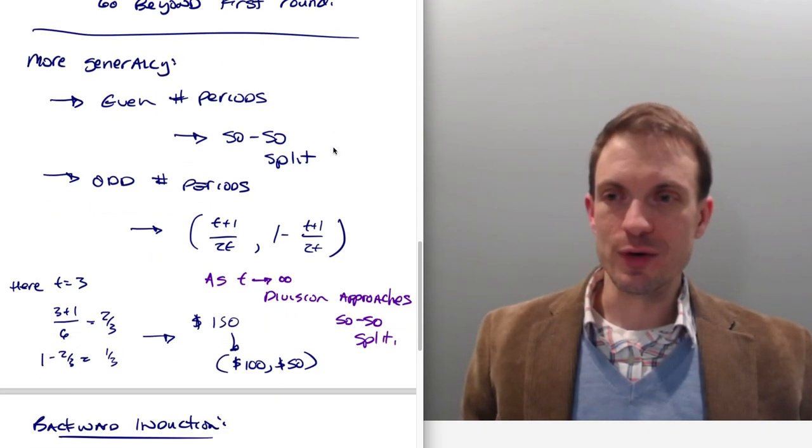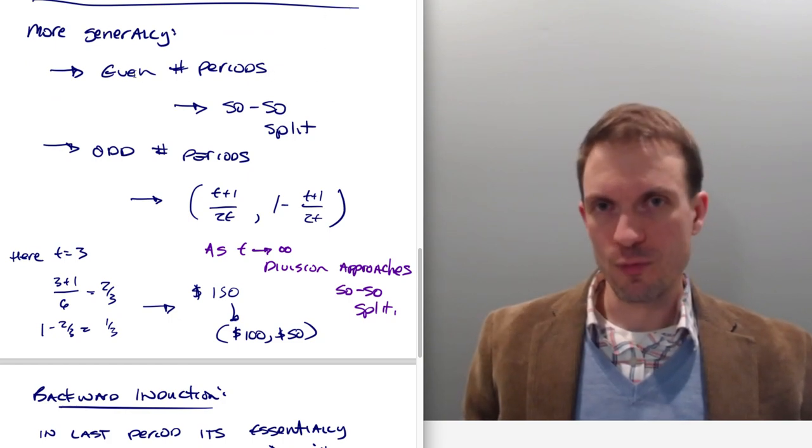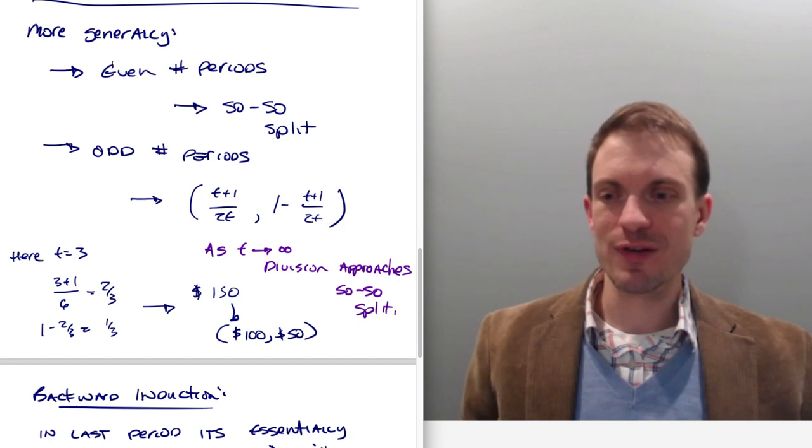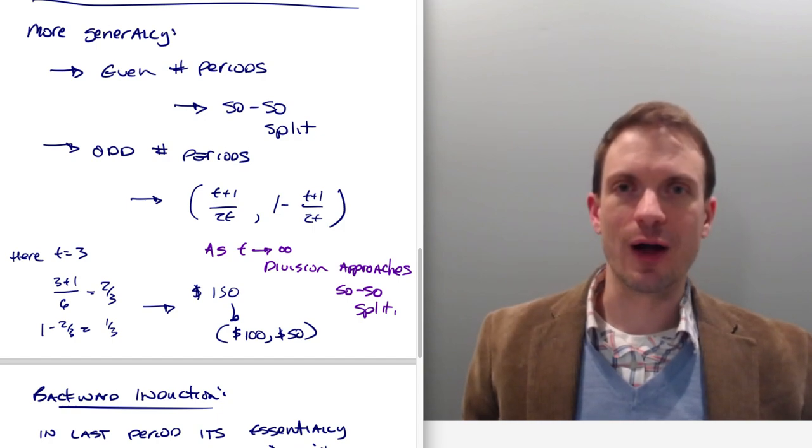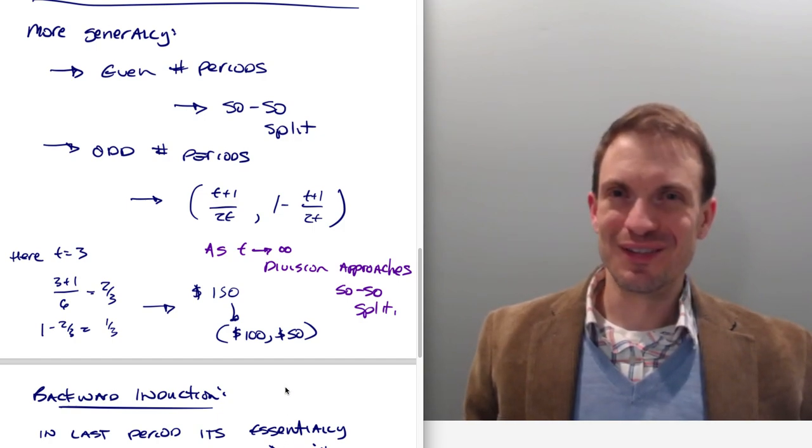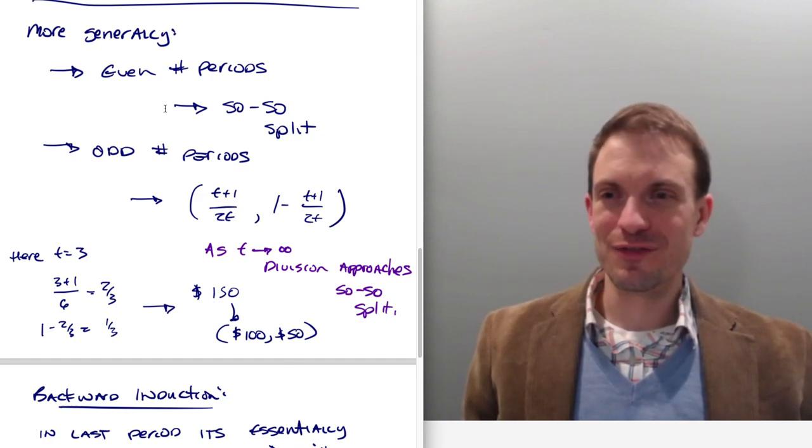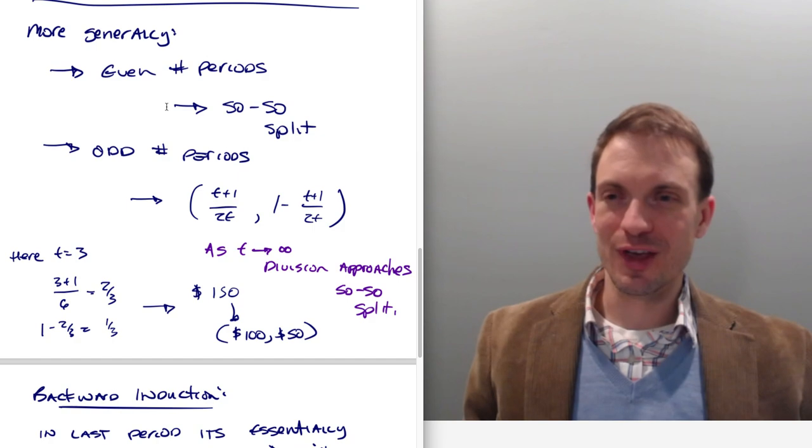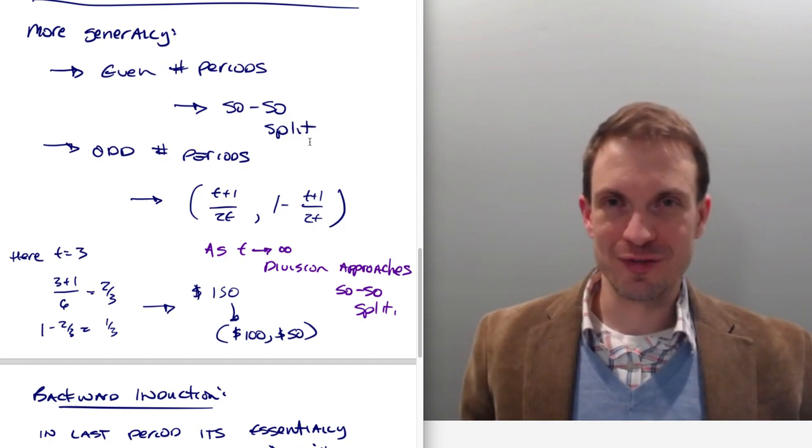So more generally, we have this result, and I'll talk about how we get this result. But before I go any further, more generally, we have this result that if we have an even number of periods, we're going to get a 50-50 split. Now watch for that as I'm doing this backward induction. When you get to period two, what's going to be the proposal? 50-50 split. So it doesn't matter if you have a problem where there's like two periods or four periods or 10 million periods, the theory is going to predict a 50-50 split.